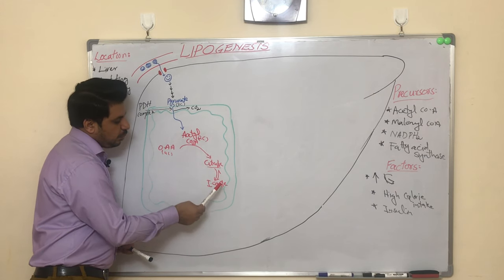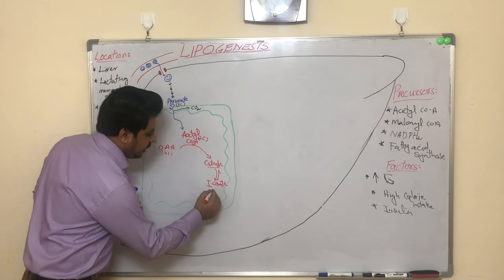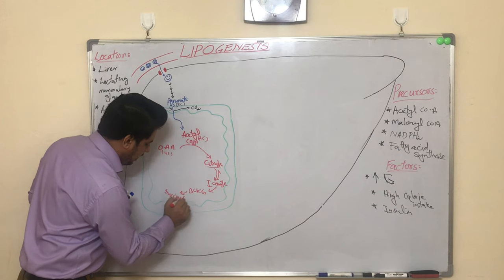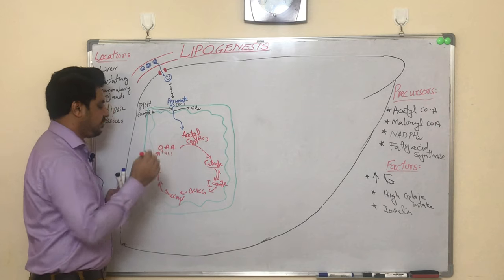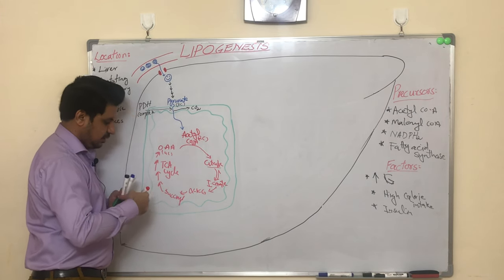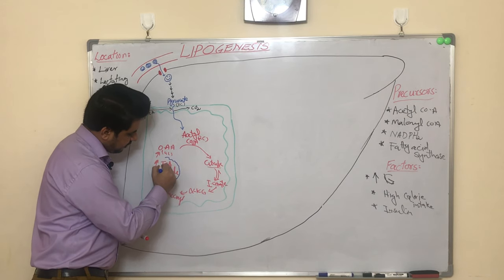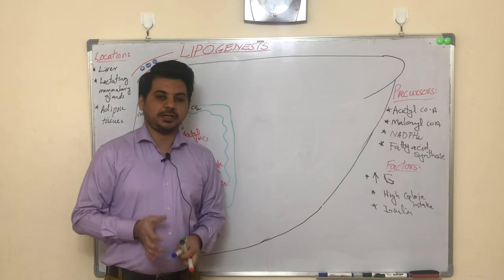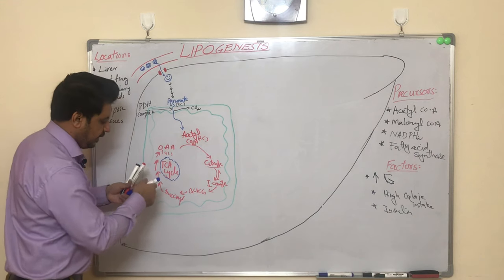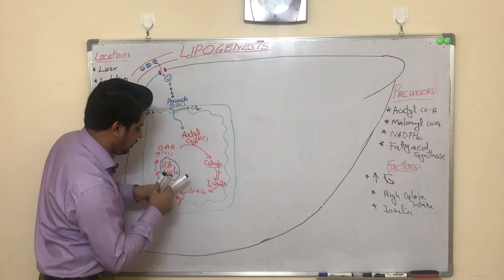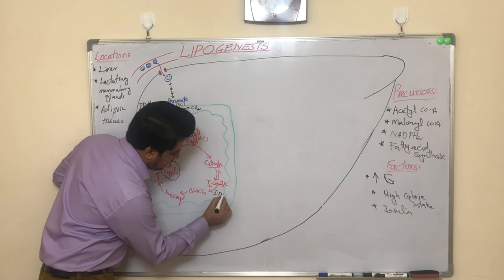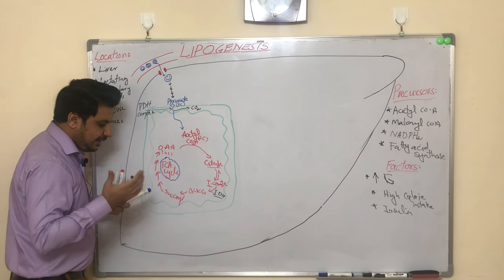Isocitrate is converted into alpha-ketoglutarate, which is converted into succinyl-CoA, and the reaction continues until oxaloacetate is formed again — completing the TCA cycle. The turning point comes when ATP levels in the cell rise enough.